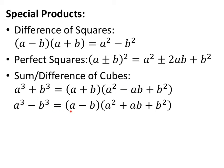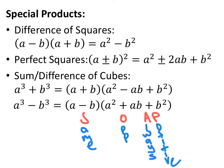The sum and difference of cubes is very important. Unlike the difference of squares where it has to be subtraction, for the sum and difference of cubes it can be addition or subtraction. If you have a perfect cube plus or minus a perfect cube, it factors into a binomial times a quadratic trinomial. The first binomial is the cube root of the two terms. For the quadratic trinomial part: square the first term, multiply the two terms together, then square the last term. To remember the signs, look at the sign from the original polynomial: same sign, opposite sign, then always positive.